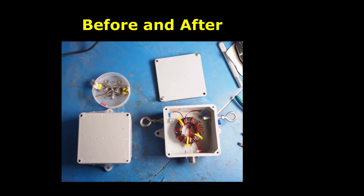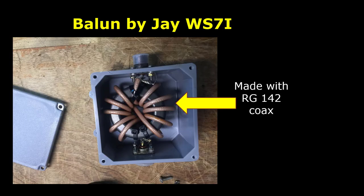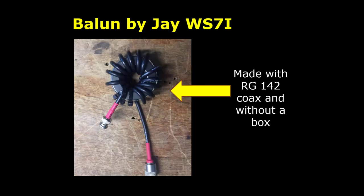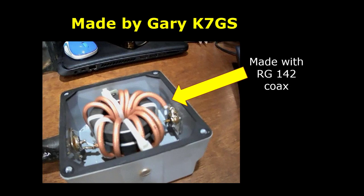Here's the before and after. Obviously on the left this is the kit and the parts, on the right is the finished product. I wanted to show a few others. Here's one by JWS7I and it's made with RG-142 coax, same principle, same number of windings, just with coax instead of using enameled wire. Here's another one without a box. Some people prefer to have them without a box because they dissipate heat better. Here's another one with a different coax again without a box, and then here's one by Gary K7GS. Notice it has multiple toroids. This can handle much more power and it's made with 142 coax. Thank you for watching this video.